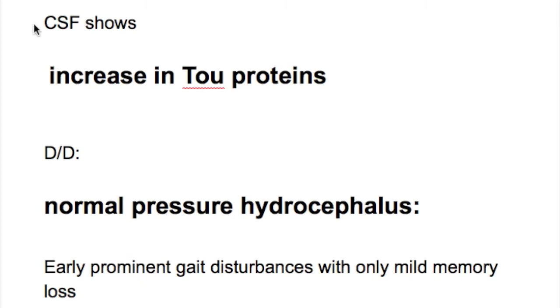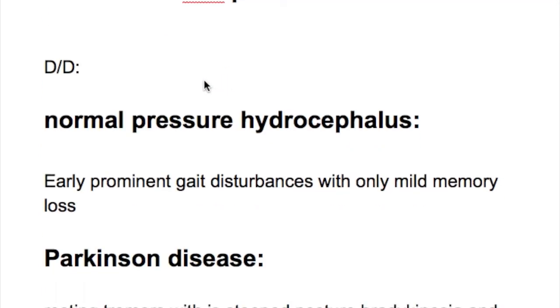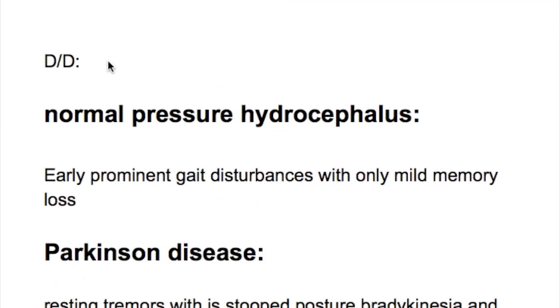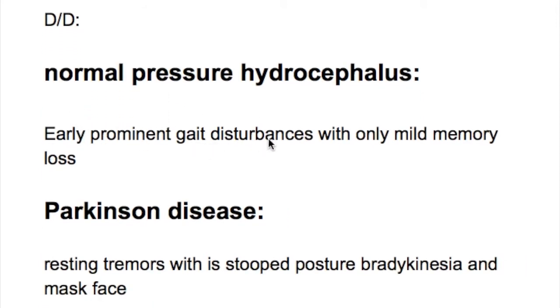CSF may show increase in tau proteins. The differential diagnosis of Alzheimer's disease includes: Number one, normal pressure hydrocephalus - there is early prominent gait disturbances with only mild memory loss.